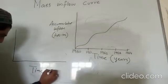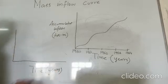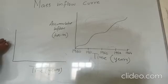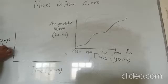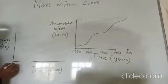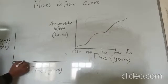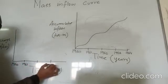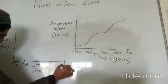Time is in years. As we know, a hydrograph is a plot between discharge and time. On the y-axis we have discharge, usually in cubic meters per second. For example, this is our hydrograph for years 1960, 1961, 1962, 1963, and 1964.